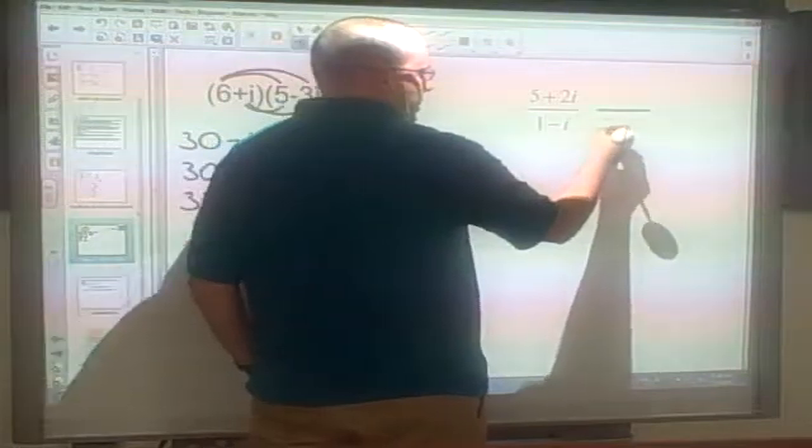Now a complex conjugate is the same term but with a different sign in the middle. So if it's 1 minus I, then we're going to use 1 plus I. So this is rationalizing your denominator as well, which we also looked at with radicals in H1.